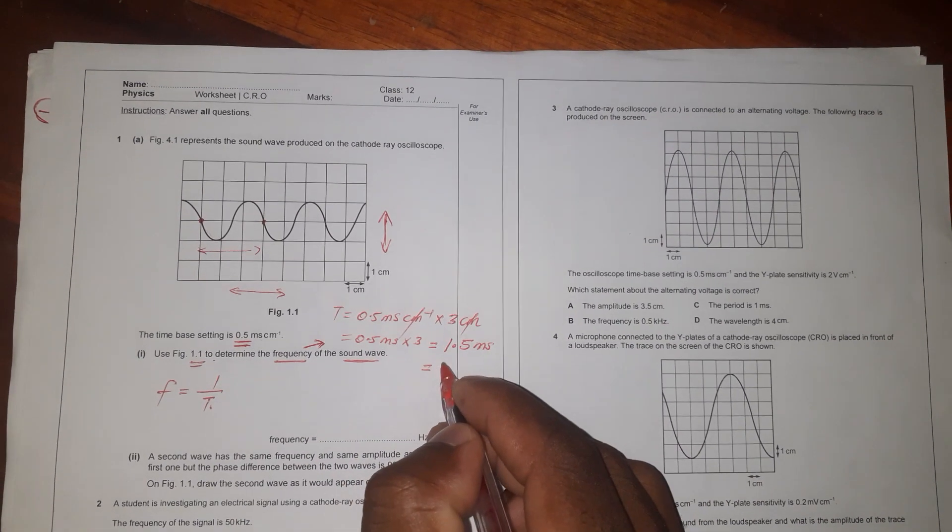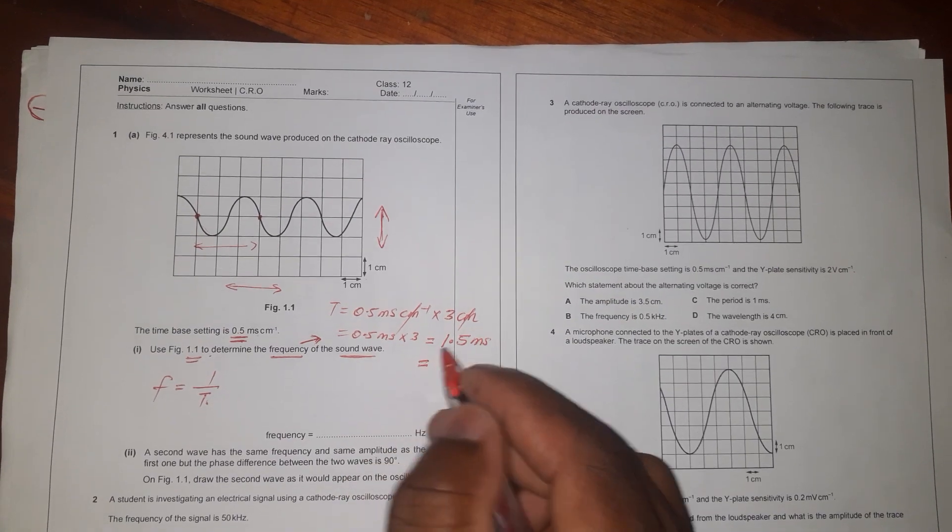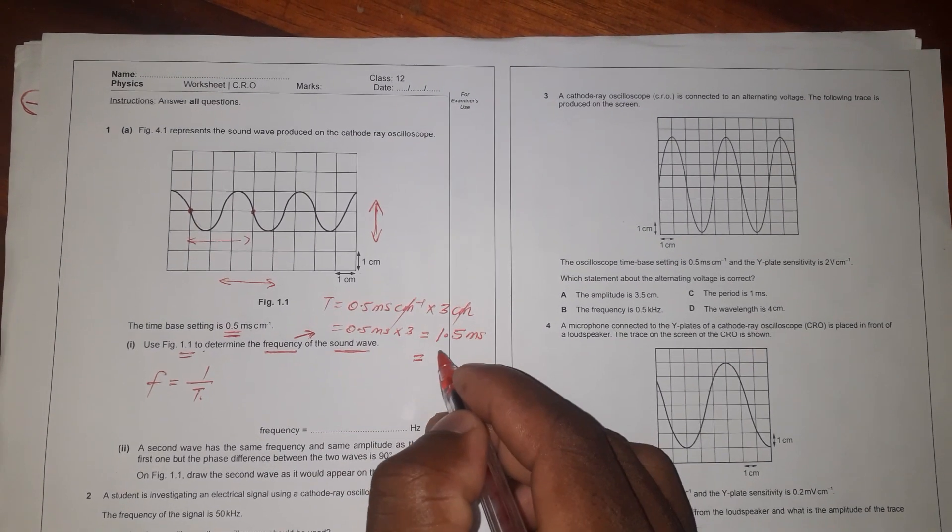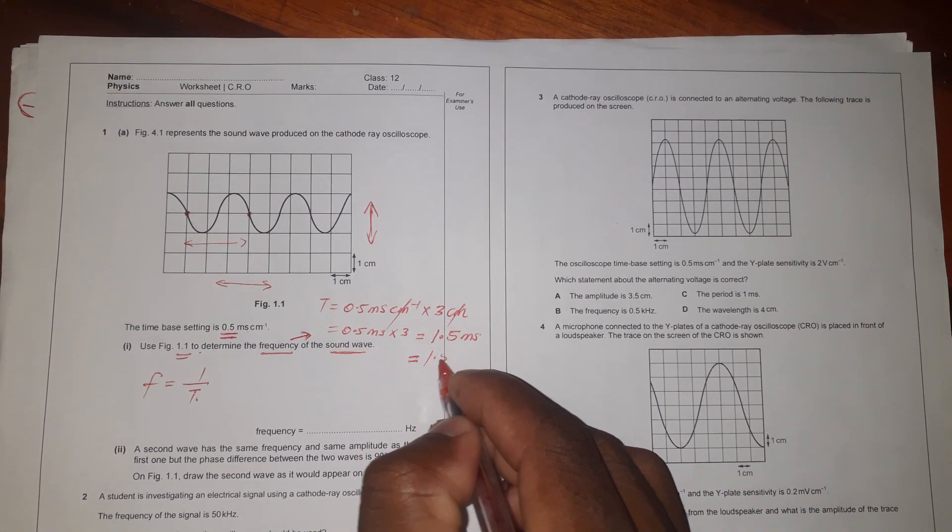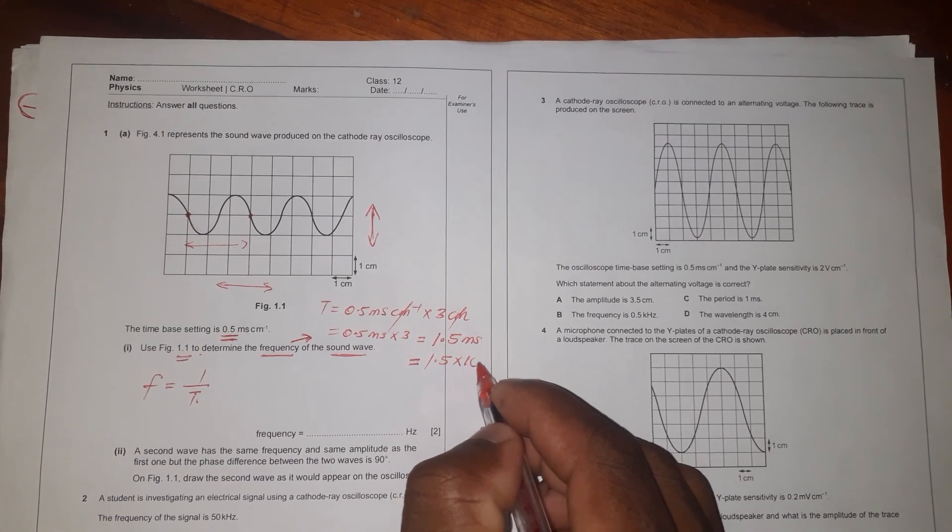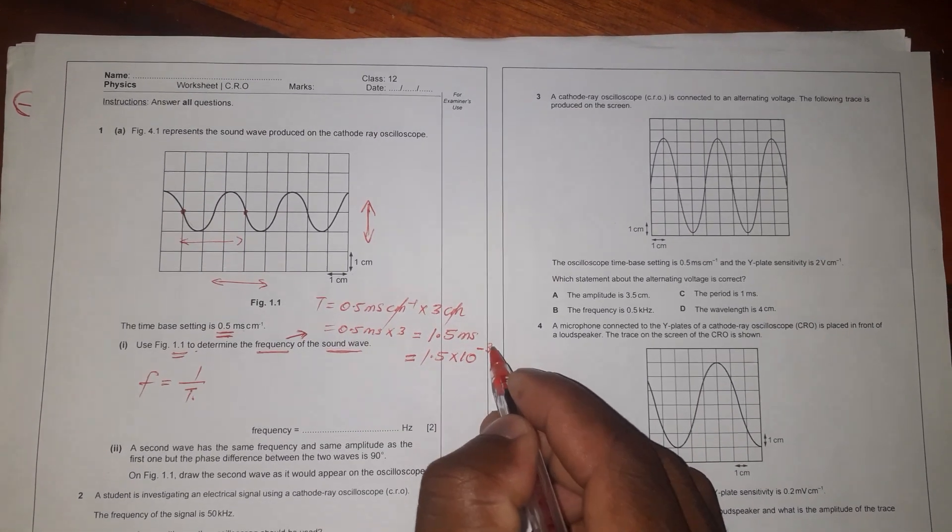Using the prefixes or the SI units in this case, now we can write 1.5 times 10 to the power minus 3, because of milli, and then the unit now is seconds.